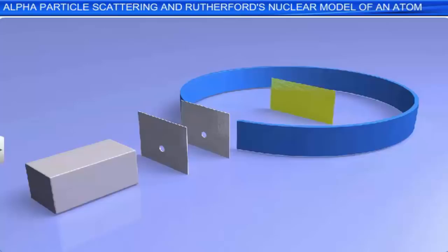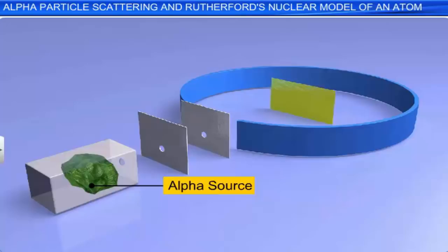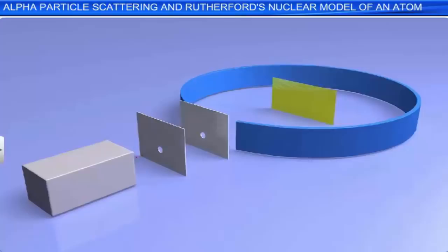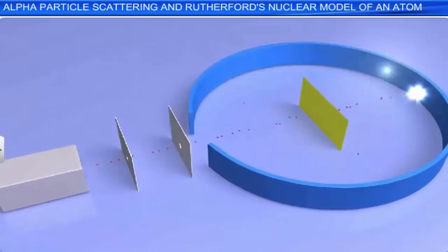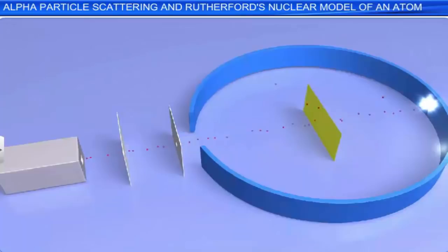The experimental setup consisted of a source of alpha particles, like bismuth-214, placed in a cavity in a lead block, and the arrangement was made to obtain a narrow beam of alpha particles by passing them through space between lead bricks. We should remember that the alpha particles were actually helium nuclei. The charge of the alpha particle is 2 times the charge of the proton, and its mass is 4 units.